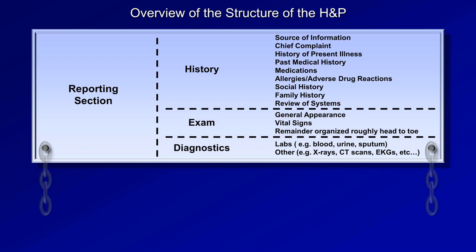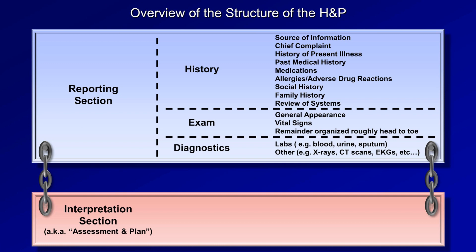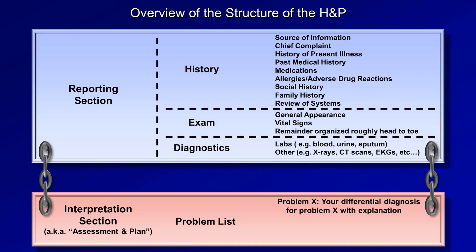In addition to the reporting section, there is also an interpretation section, frequently referred to as the assessment and plan. This typically takes the form of a problem list. Each problem the patient has on admission — whether an acute physiologic derangement, a particular symptom, an unexplained exam finding, or a chronic medical condition — should be listed here. For any new problem, there should be a differential diagnosis with explanation, and each problem should have diagnostic, therapeutic, and educational plans if relevant.